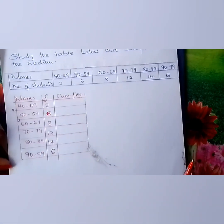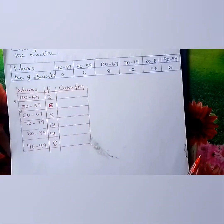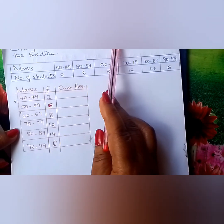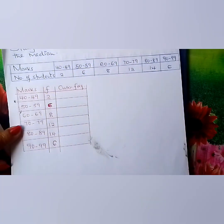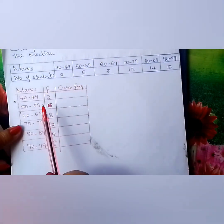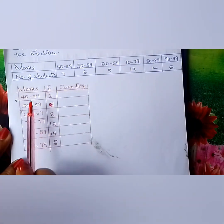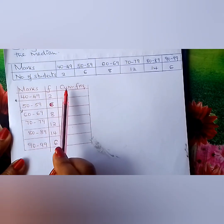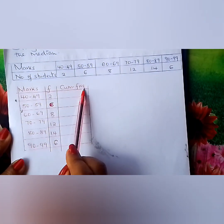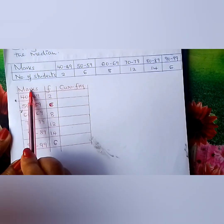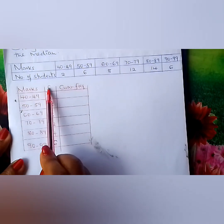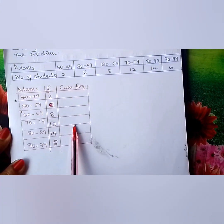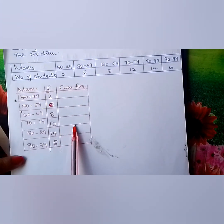That is our table. We are now to calculate the median mark. So you come and draw a table with columns for marks, frequency, and cumulative frequency.